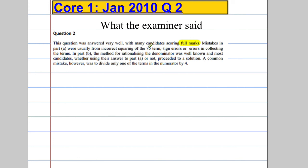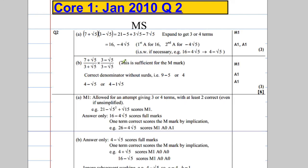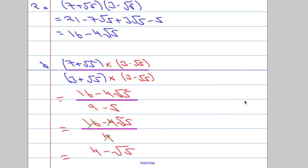Mistakes in part A, they were usually for incorrectly squaring the root 5 terms, so be careful there. Sign errors and errors collecting terms, so be very careful there. Rationalizing was well known. Common mistake, though, is at this point, when we get here, a common mistake, and don't do this, is to just cancel the 4 into the 16. It's got to cancel into every term, so don't forget that.